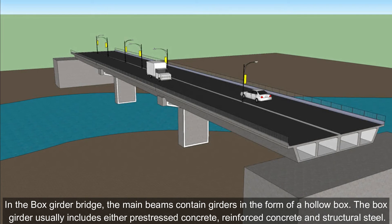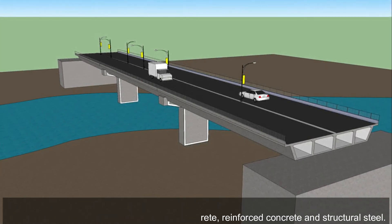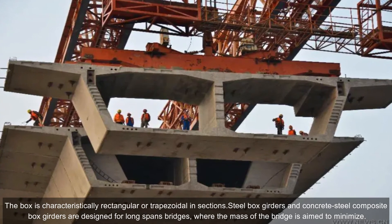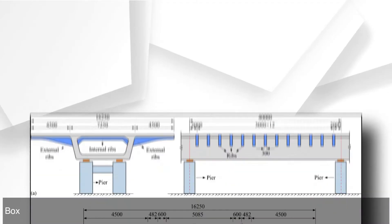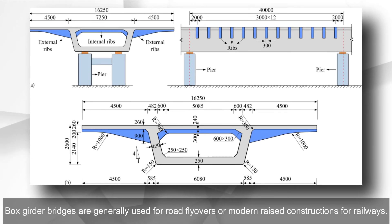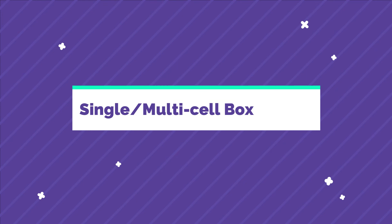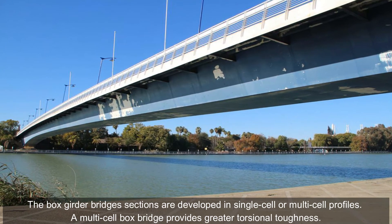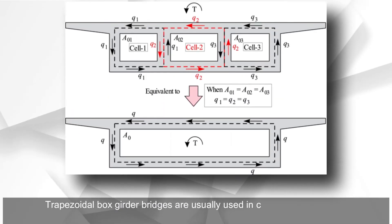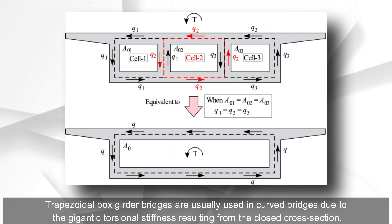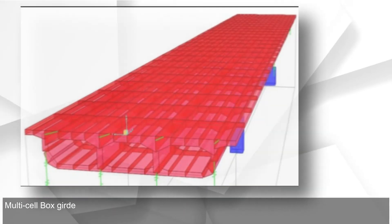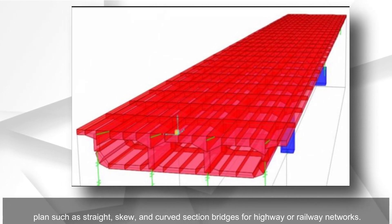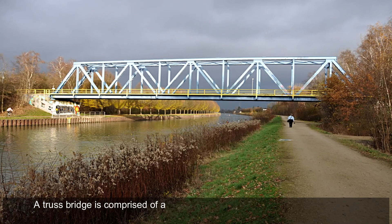In a box girder bridge, the main beams contain girders in the form of a hollow box, typically made of prestressed concrete, reinforced concrete, or structural steel. The box is characteristically rectangular or trapezoidal in cross-section. Steel box girders and concrete-steel composite box girders are designed for long-span bridges where minimizing mass is a priority. Box girder bridges are commonly used for road flyovers and modern elevated railway structures, available in single-cell or multi-cell profiles. Multi-cell box girder decks are cast in-situ and can accommodate straight, skew, or curved alignments.